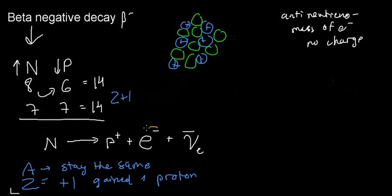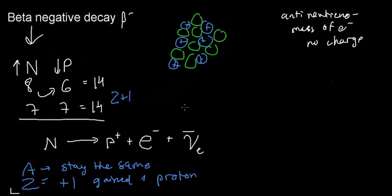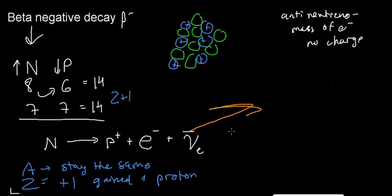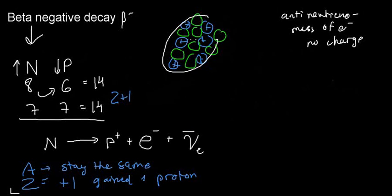Electrons and anti-neutrinos do not exist inside a nucleus. That means they can't stay there — in this type of decay, they're shooting out of the nucleus.